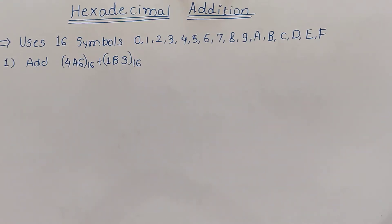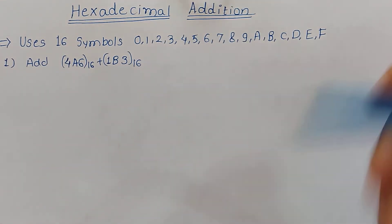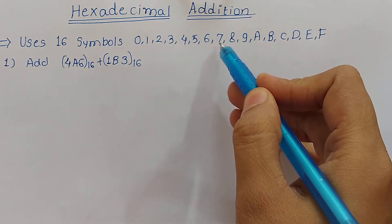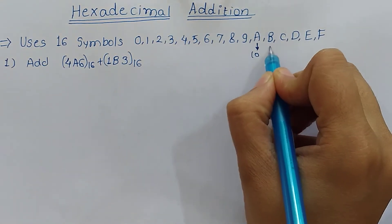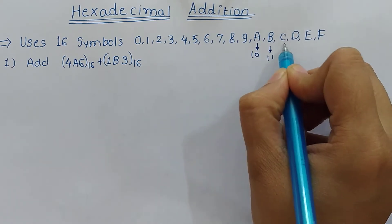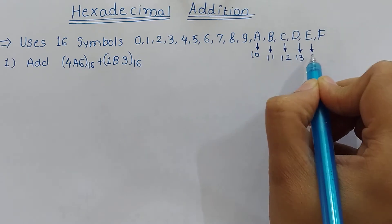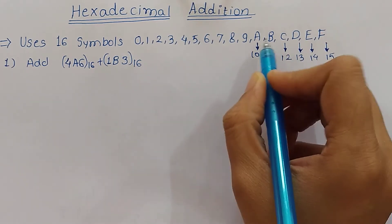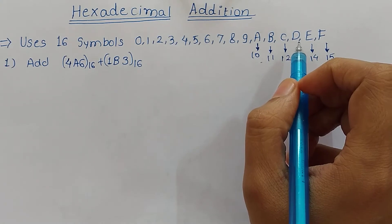Hexadecimal addition. A hexadecimal number consists of 16 distinct symbols which are 0 to 9 and A, B, C, D, E, F. Here 0 to 9 is common between decimal and hexadecimal. A means 10 in decimal, B means 11, C is 12, D is 13, E is 14, and F is 15. These are the decimal equivalents of these hex symbols.